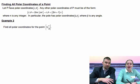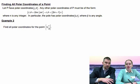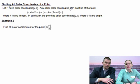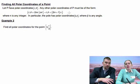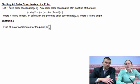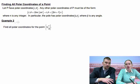So we have a formula. If we have the polar coordinate (R, θ), any other polar coordinates of that point must be of the form this or this, where n is any integer.